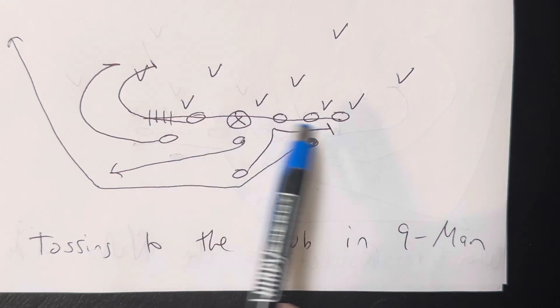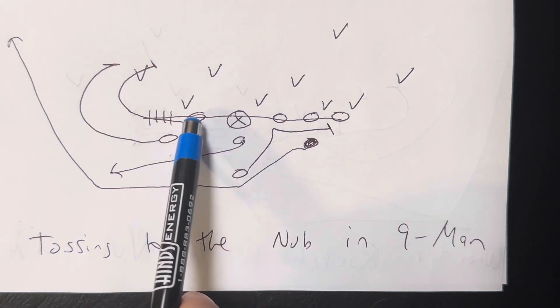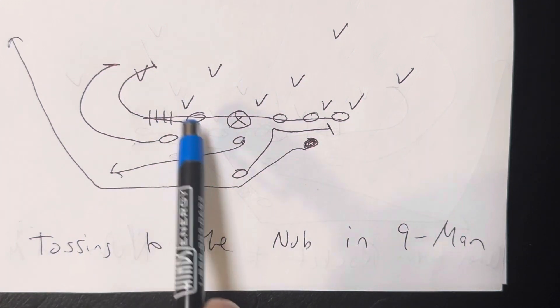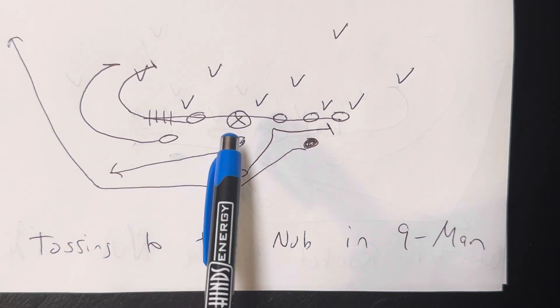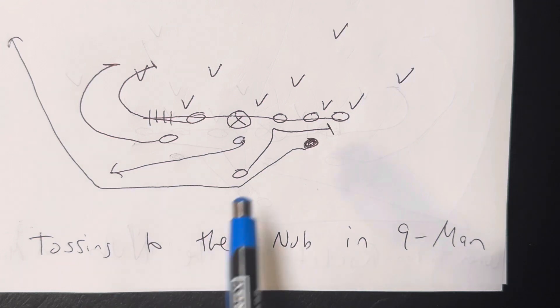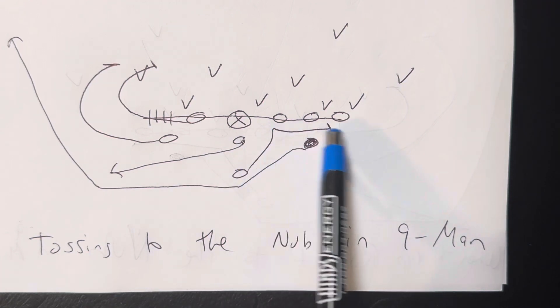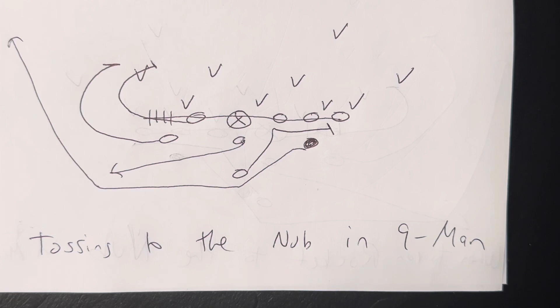The four guys right here are all going to run to the sideline. He's going to basically chase the guard, or excuse me, the end, and they're going to run to the sideline. The B back is going to touch the guard, flatten out, block the first threat from the guard out.